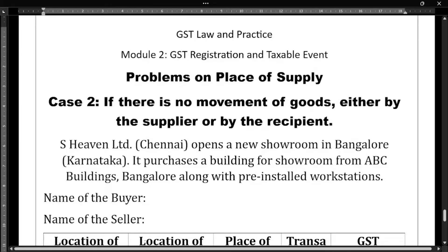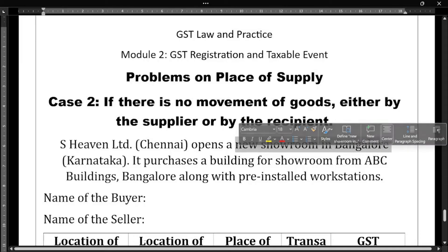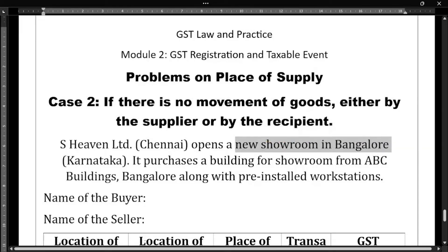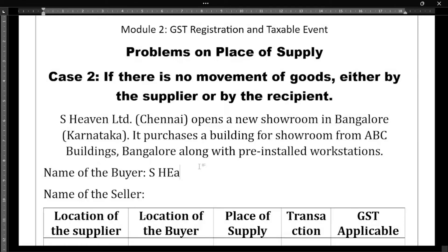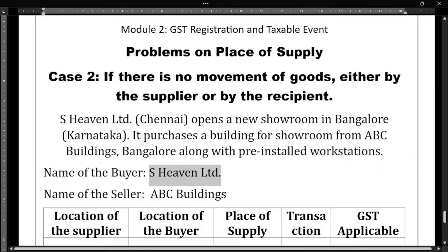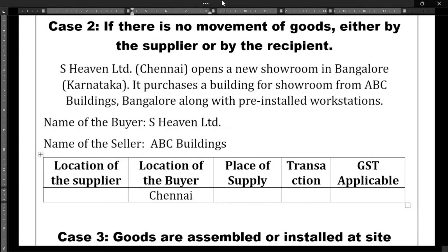Yes Heaven Limited, who is in Chennai, opens a new showroom in Bangalore — Bangalore is in Karnataka. It purchases a building for the showroom from ABC Buildings. ABC Buildings has already pre-installed workstations in the building. The buyer here is Yes Heaven Limited, and the seller is ABC Buildings. Yes Heaven Limited is located in Chennai, and ABC Buildings is located in Bangalore, Karnataka.